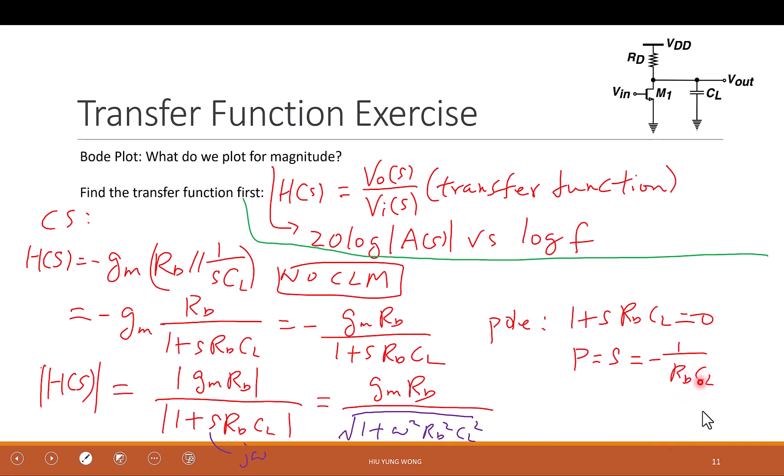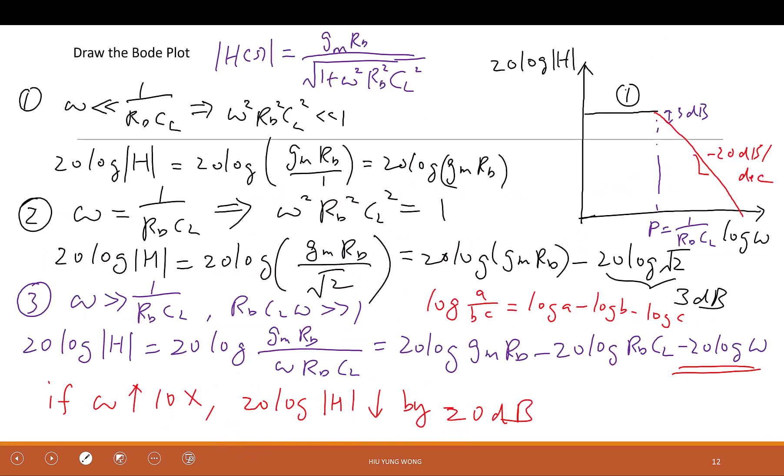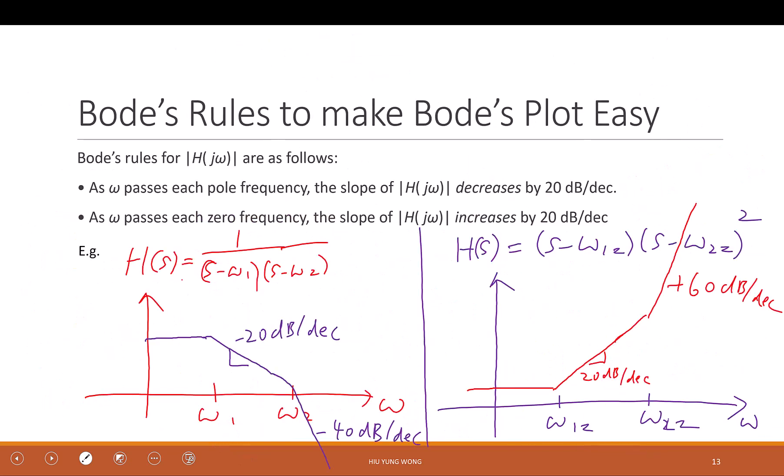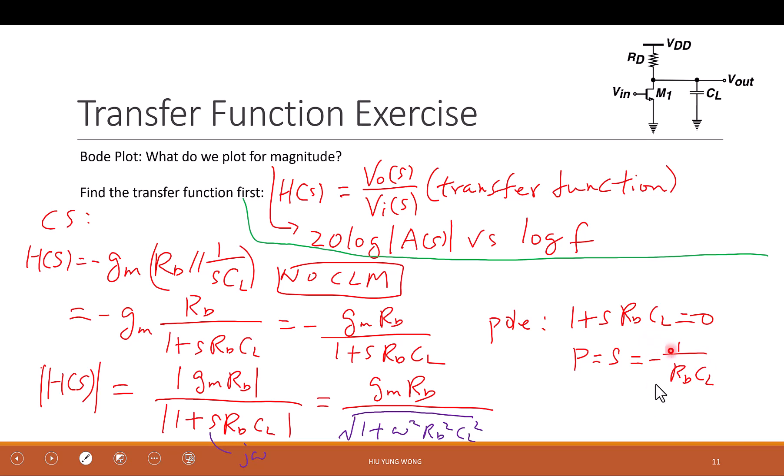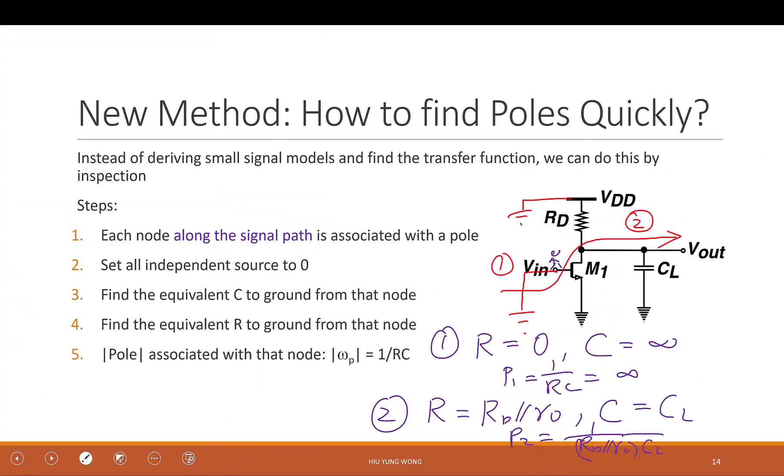1 over Rd parallel Ro times CL. And that is exactly what we got earlier. Rd parallel CL, where we don't have channel length modulation. We got a negative this one and a positive. Yeah, formally this is a negative pole by the theorem, but what we care is like, I mean, you can put negative here also because this is talking about the absolute value. You only give it the absolute value. Yeah, so that's a good question. See, what we are giving you is the absolute value of the pole.